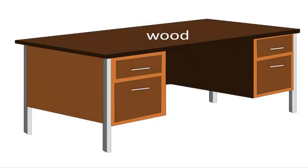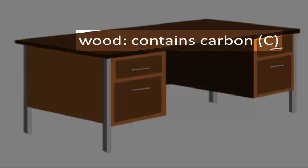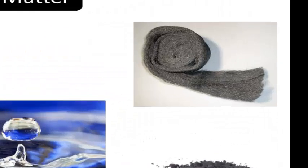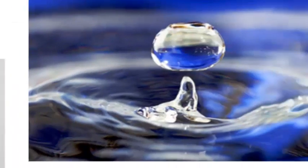But what is steel and what is wood made of? Steel is made mainly of iron and wood contains a lot of carbon. Here's some steel and here's some carbon. There are many other kinds of matter. Here's some copper, some sulfur and some water.